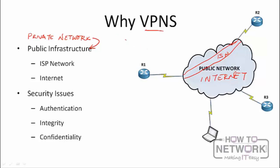In Cisco you may have heard of GRE tunnels — Generic Router Encapsulation — which is a tunnel created between two endpoints. GRE tunnels make two devices on a common public network seem like they're directly connected. For example, router 1 and router 2 can share an IP network like 192.168.1.0, with R1 as dot 1 and R2 as dot 2. However, GRE tunnels on their own are insecure — they have no authentication, no data integrity, and no confidentiality.